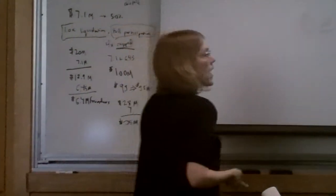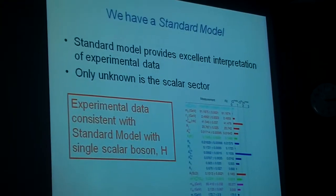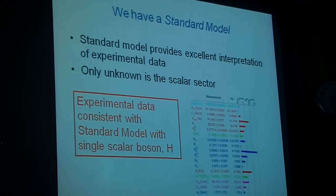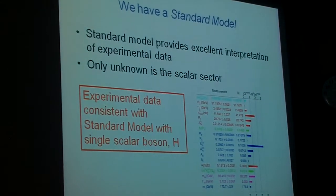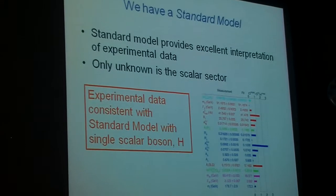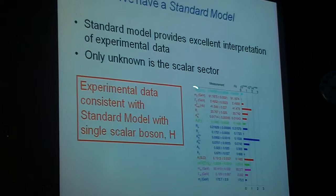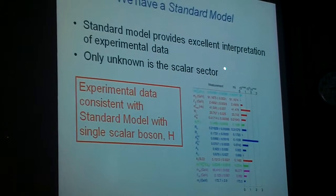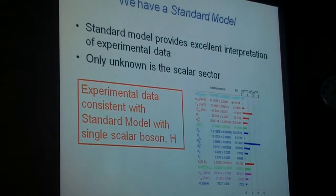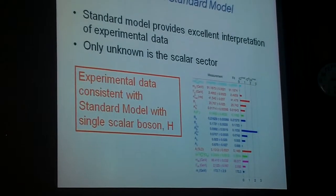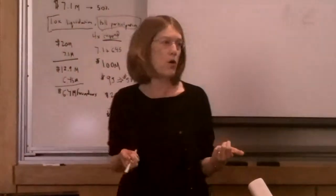So we have a standard model. The standard model is this SU(3) cross SU(2) cross U(1) gauge theory with this SU(2) doublet of scalars. One physical scalar remains. The standard model essentially explains all of our experimental data. You can't see these numbers, but the point here is that these are a large number of experimental numbers. Here are the measurements with their errors. This model has one free parameter, this scalar mass. We can describe it by inputting three parameters, which are typically taken to the mass of the Z boson, the Fermi coupling, and alpha electromagnetic.